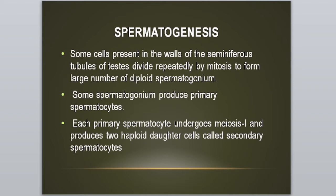Some cells present in the walls of the seminiferous tubules of testes divide rapidly by mitosis to form a large number of diploid spermatogonium. یعنی کہ کچھ cells ہوتے ہیں جو seminiferous tubules of testes میں mitosis کے ذریعے several times divide ہوتے ہیں اور large number of diploid spermatogonium بناتے ہیں۔ پھر some spermatogonium primary spermatocyte produce کرتے ہیں۔